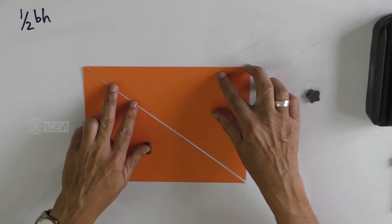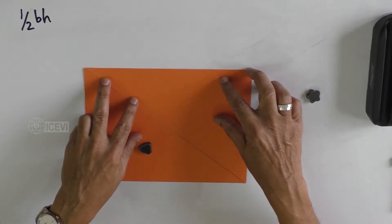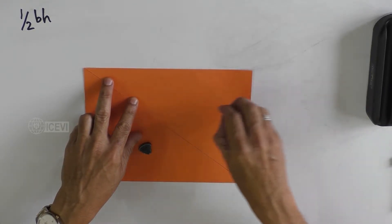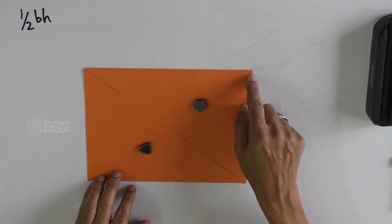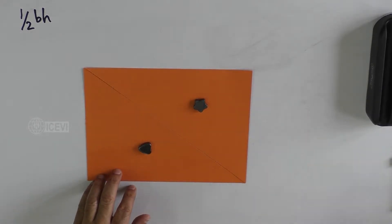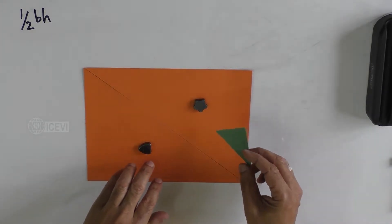When you put together, you get a rectangle. What is the definition of a rectangle? In a rectangle, the four angles are right angles.